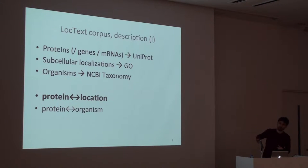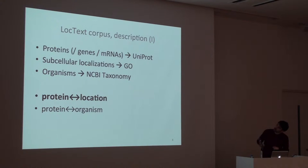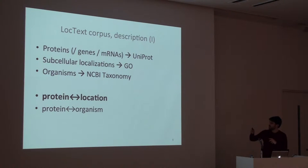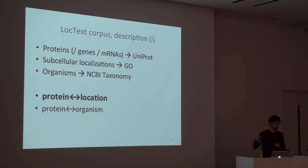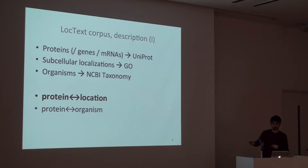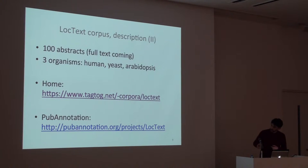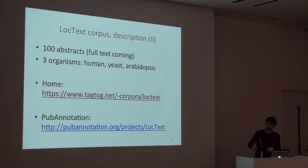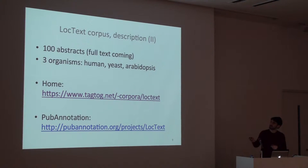I'm going to describe what we have annotated in the corpus. That is proteins — as Larry Hunter said before, we put into the same class protein genes and RNAs, we remove that ambiguity and normalize to UniProt. We also have sub-cellular localizations normalized to GO terms, and organisms normalized to the taxonomy. For relations, the most important one is the protein-location relation, and also protein-organism to make protein normalization possible. The corpus has 100 abstracts; we are now also annotating full-text documents, and this is done manually. We annotated documents for three kinds of organisms: human, yeast, and Arabidopsis.